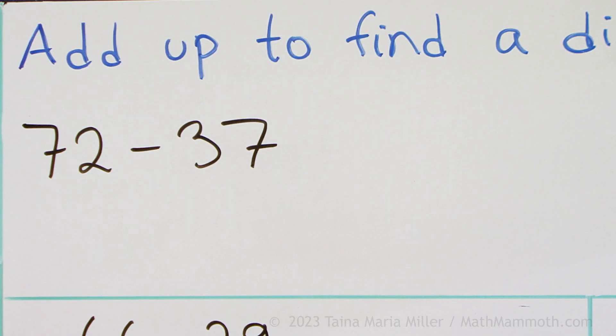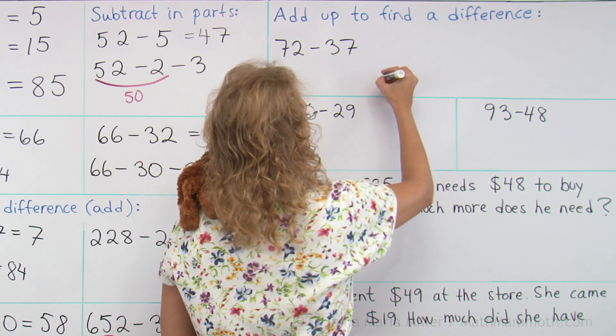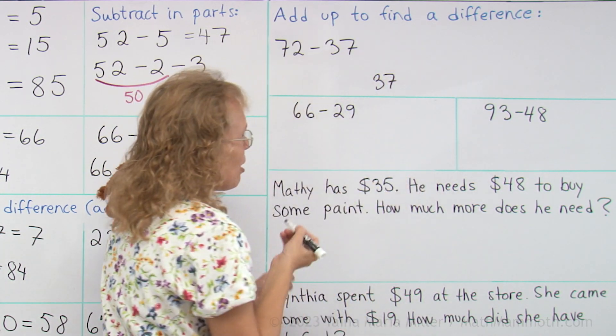And this is how it works. I go from 37 and I add until I get to 72. Kind of like thinking of the number line. If you were at 37 on a number line.